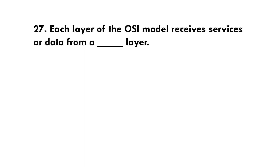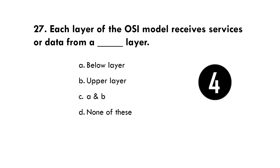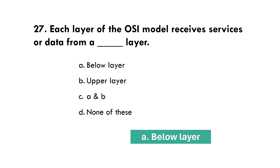Each layer of the OSI model receives services or data from — Option A: The below layer.